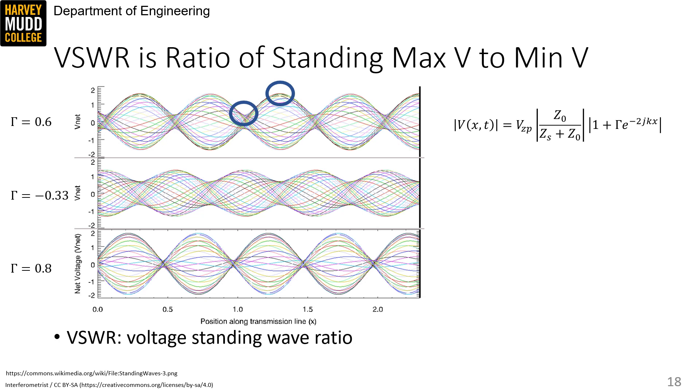As an aside, the middle graph has an interesting feature, which is that the reflection coefficient contributes some phase to the reflected wave. A gamma of minus 0.33 is still purely real, but the negative sign means reflected waves have an additional 180 degrees of phase compared to incident waves. And you can see that at this boundary if you look very closely.